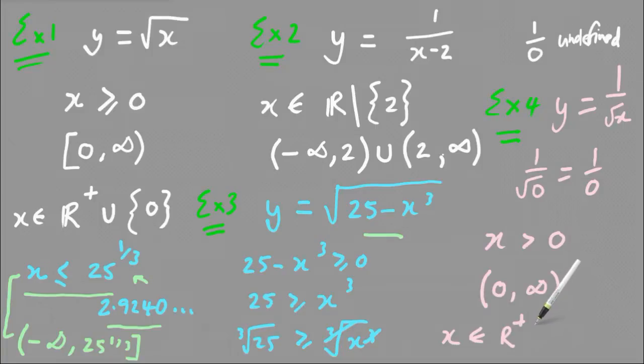So that's what the maximal domain is. It's the implied domain when no domain is specified. And all that means is the biggest set of x values that could be substituted into the function to give a valid y value or a valid output. Thank you.